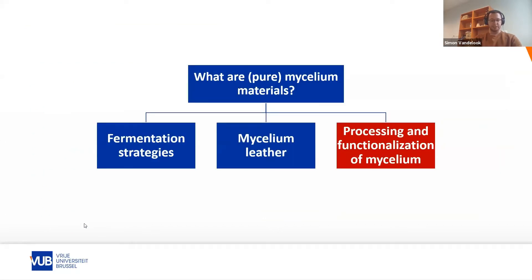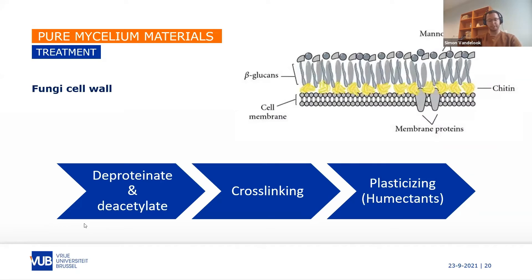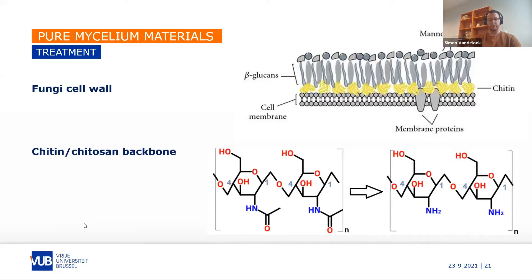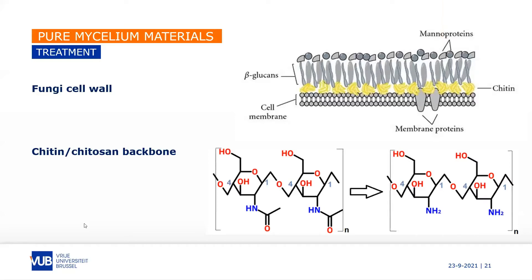The most important element of the mycelium is its cell wall, which provides great structural support. The cell wall of fungi is composed of mannoproteins, beta-glucans, and chitin or chitosan. The chitin and chitosan backbone is the main platform for chemical modification — you deacetylate chitin to liberate the amine group, which is then referred to as chitosan, and this allows you to modify the chemical structure and add new properties to the mycelium.